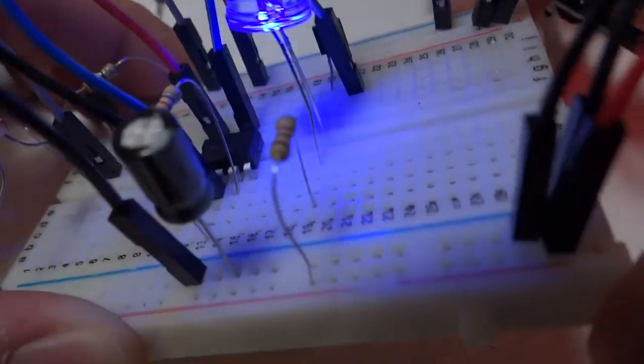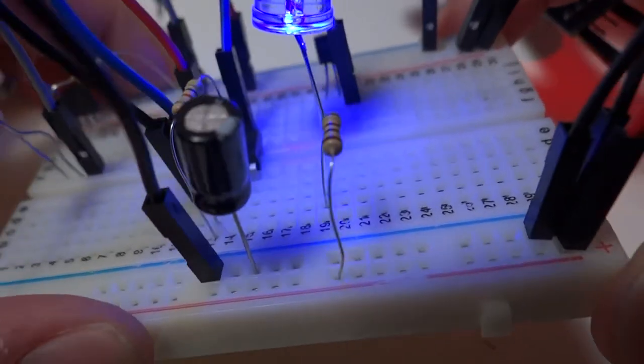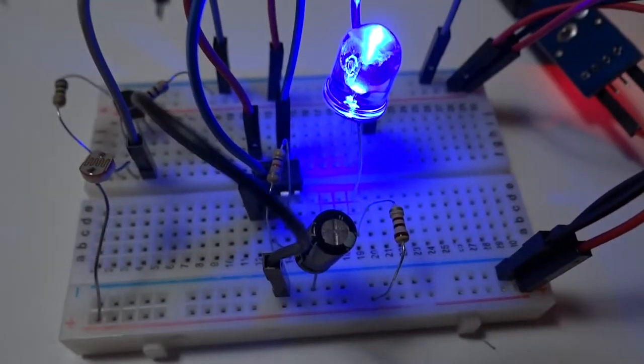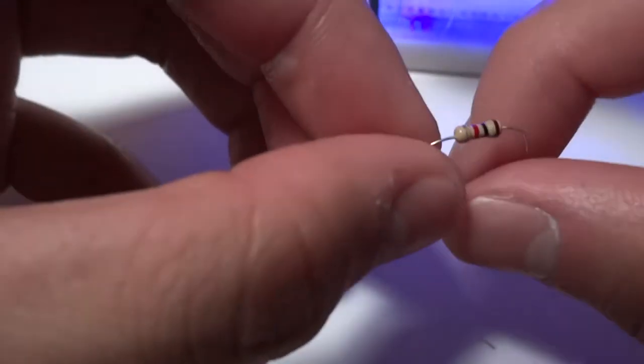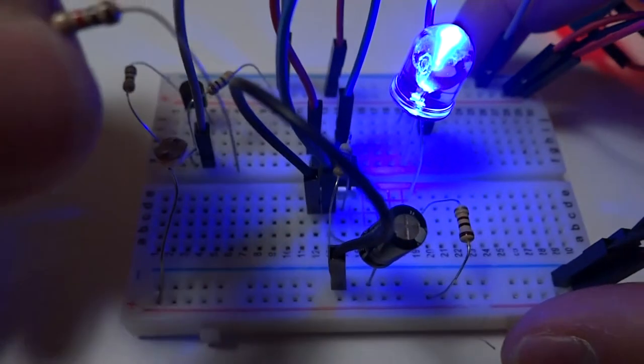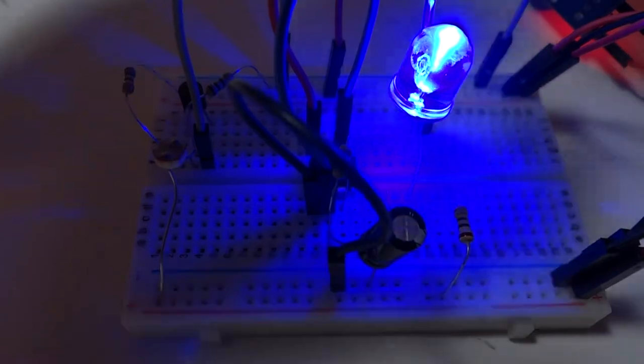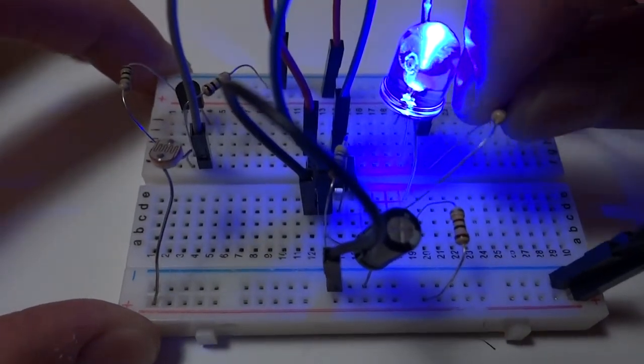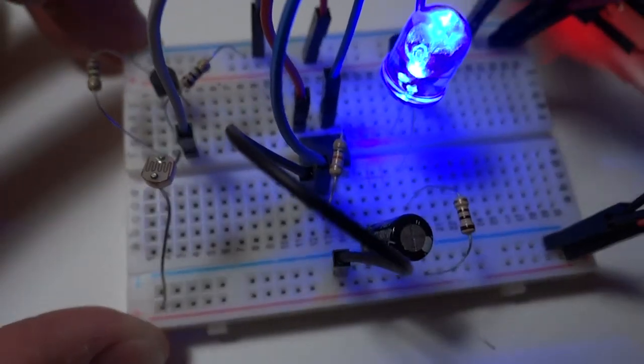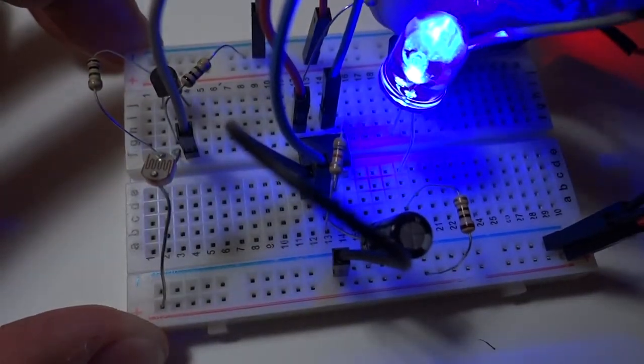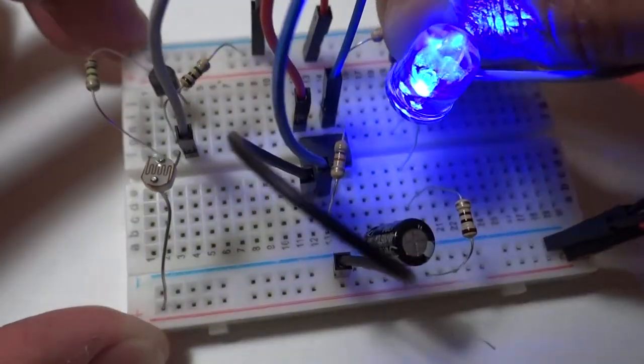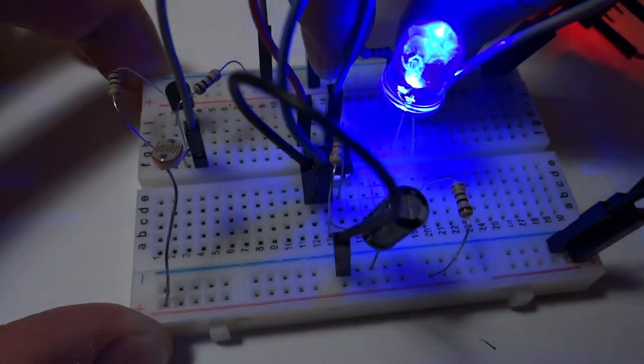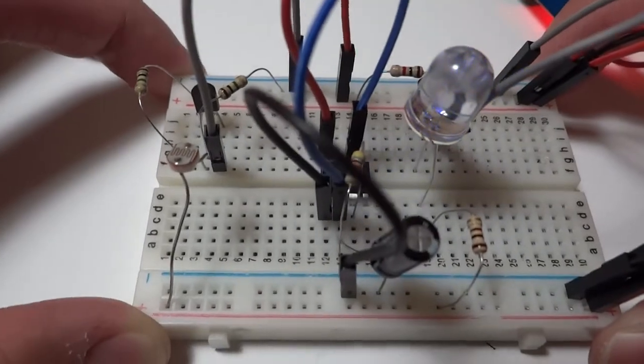The LED will turn on falsely because the gate isn't connected yet. We take a 1 kilo ohm resistor and connect the gate of the transistor to pin 6, which is connected to the capacitor. Now you can see that the LED starts to glow.